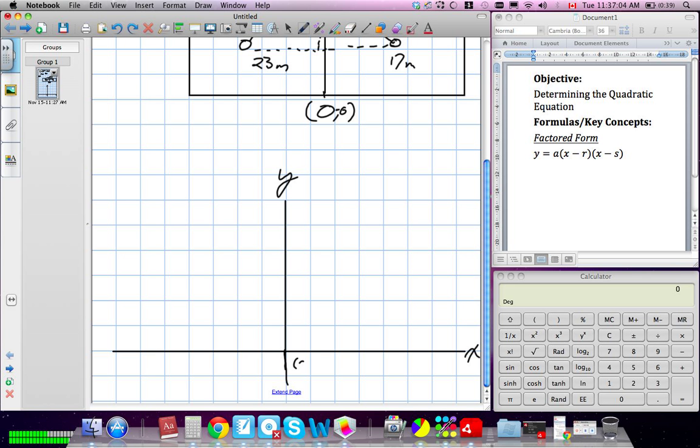The ball is kicked from 23 meters to the left. So, we're at negative 23 is where the ball starts. And it lands 17 meters to the right, which is positive 17. And in this flight path, the highest point, wherever it is, probably not exactly there, is 10 meters high.